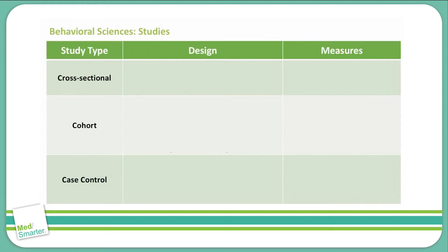Let's continue on and discuss some behavioral sciences. Specifically, we're going to discuss some studies and we're going to compare and contrast six various types of studies. On this slide you'll see the cross-sectional study, cohort study, and case control study.